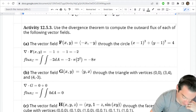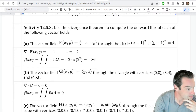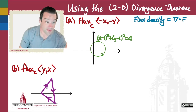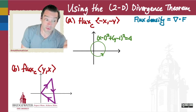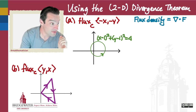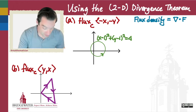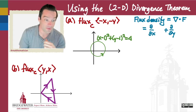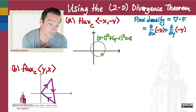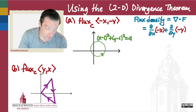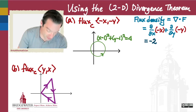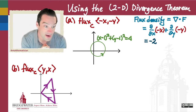To find that, the first question we ask is: what's the flux density of this vector field? That flux density is just the divergence. We find the divergence by taking the x partial derivative of the x component added to the y partial derivative of the y component. The x partial of -x is -1, and the y partial of -y is also -1. Adding those together gives -2.